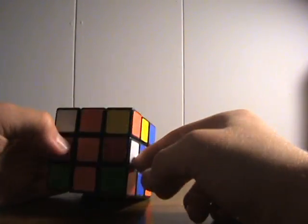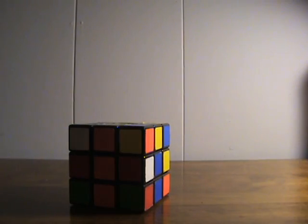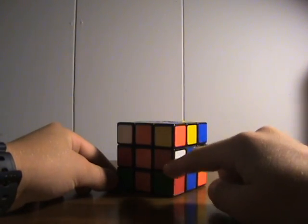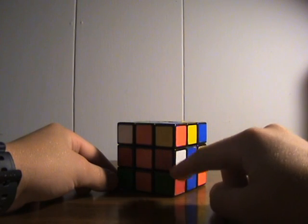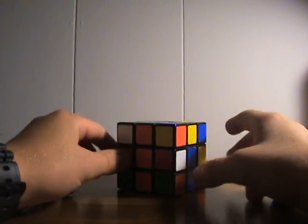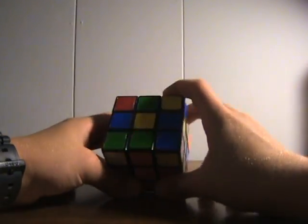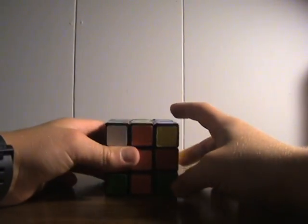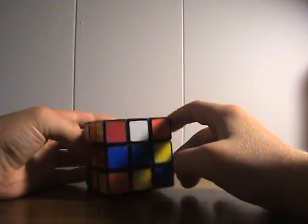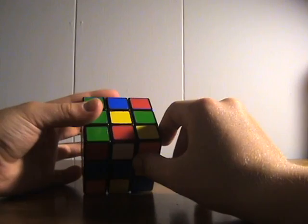First of all, you're going to pick any edge piece that has white on it. So I've picked one right here, which is the red and white piece. I'm going to take that red and white piece and try to put it up into this top face with the yellow. How I'm going to do that is I'm going to do an R turn. And now it is up here in this top face.